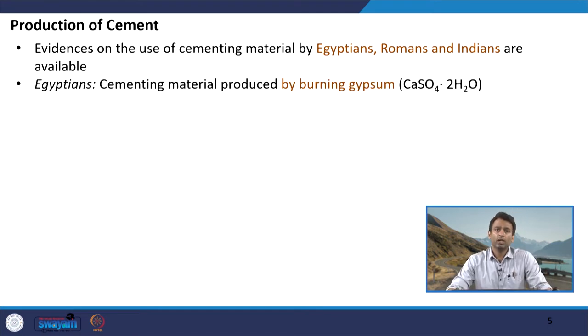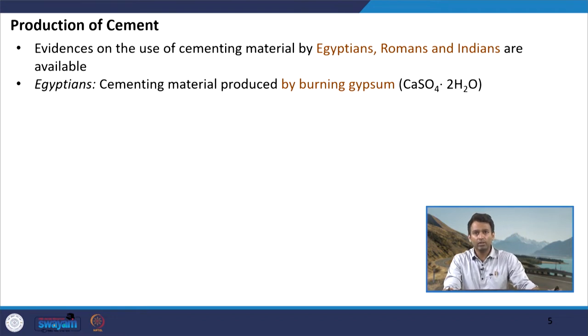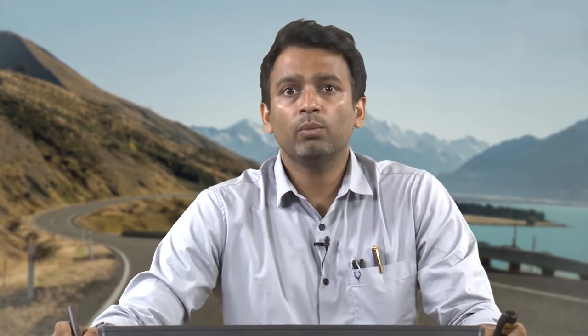Egyptians used cementing material produced by burning gypsum. For reference, gypsum is calcium sulphate hydrate — CaSO₄·2H₂O. Greeks and Romans produced a superior material by using a mixture of lime and some form of volcanic ash. The volcanic ash is basically rich in alumino-silicate minerals.